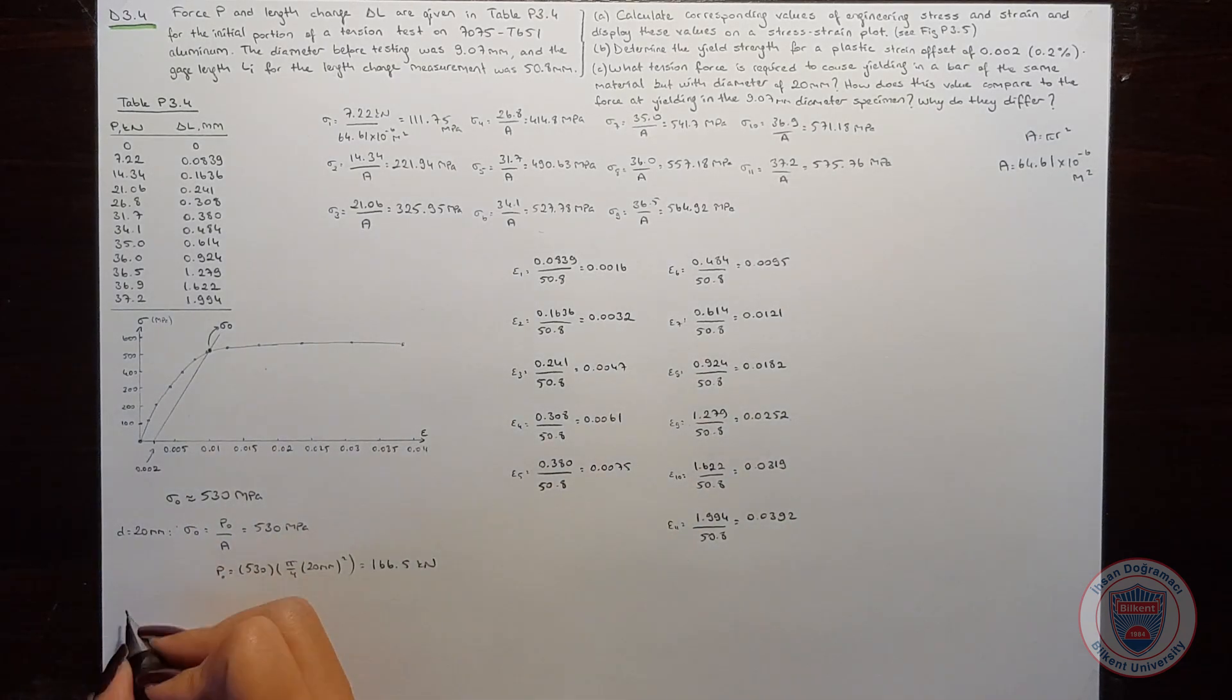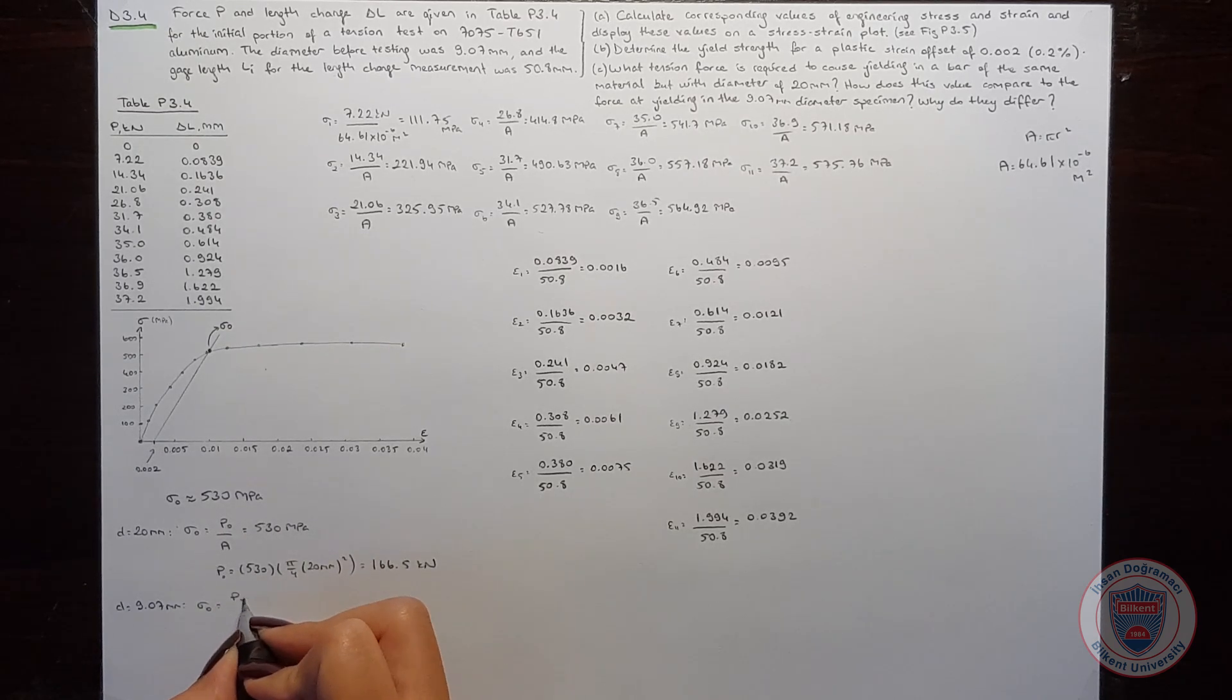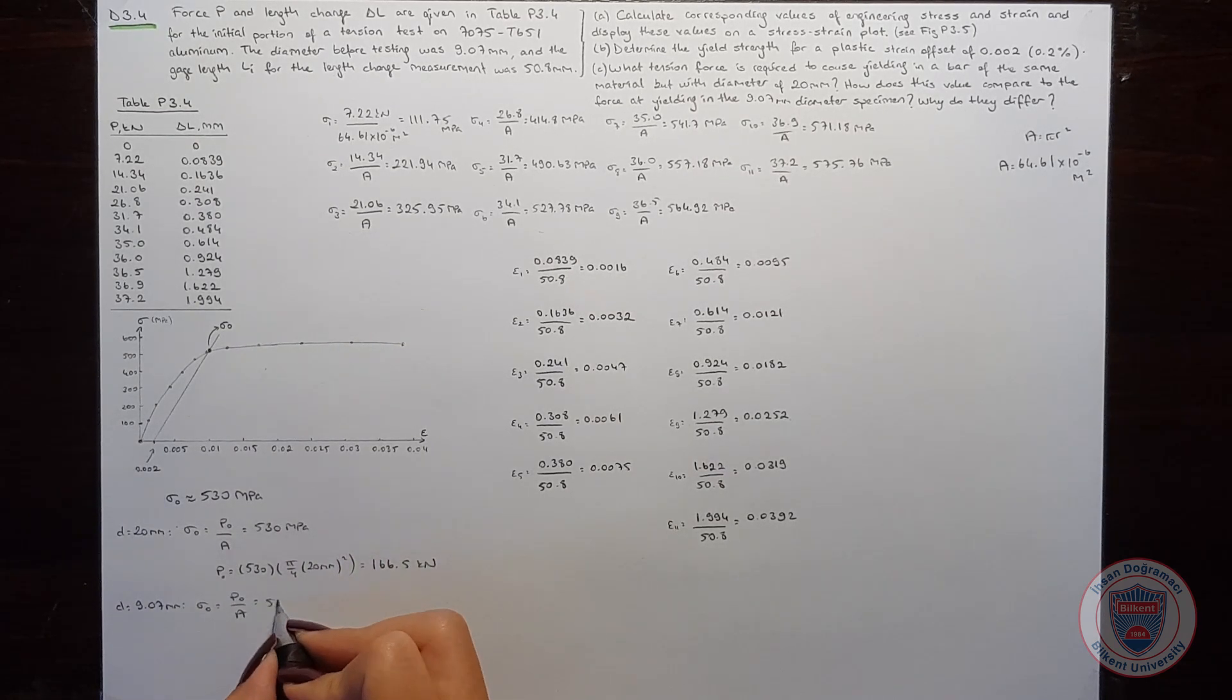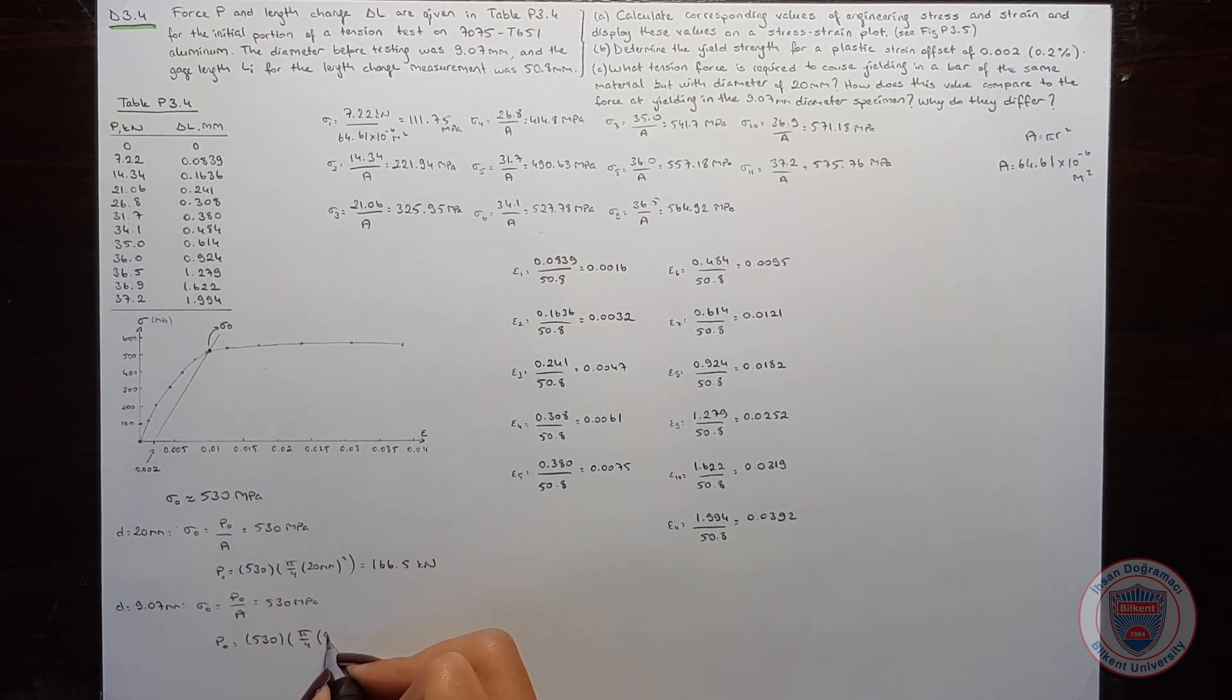On the other hand, when D is equal to 9.07 mm, sigma Y will be again P over A and again it will be 530 MPa. P₀ will be 530 times pi over 4 times 9.07 mm squared and we will have P equal to 34.24 kN.